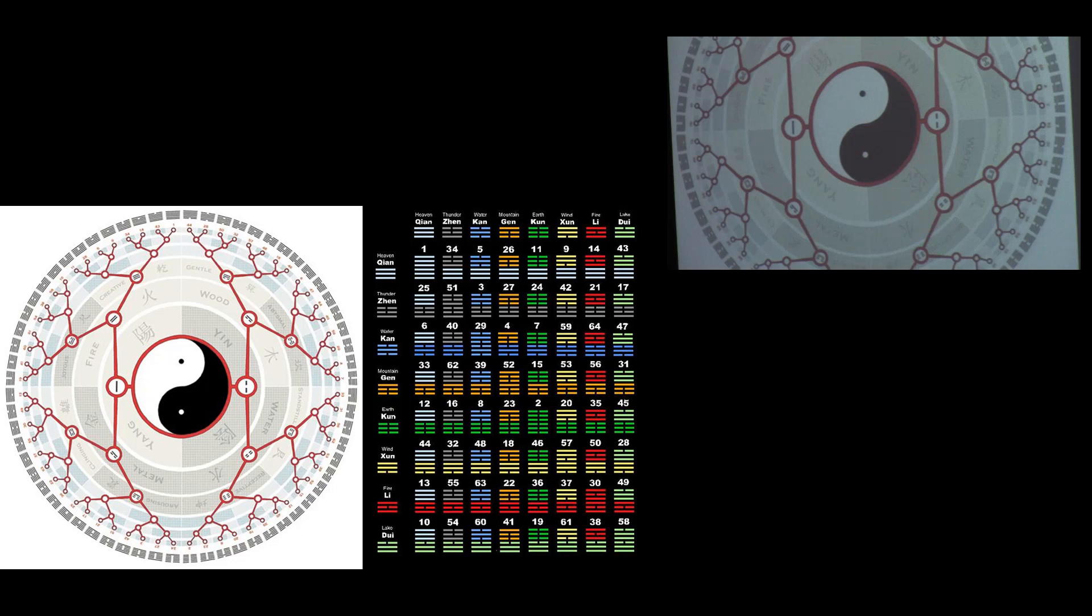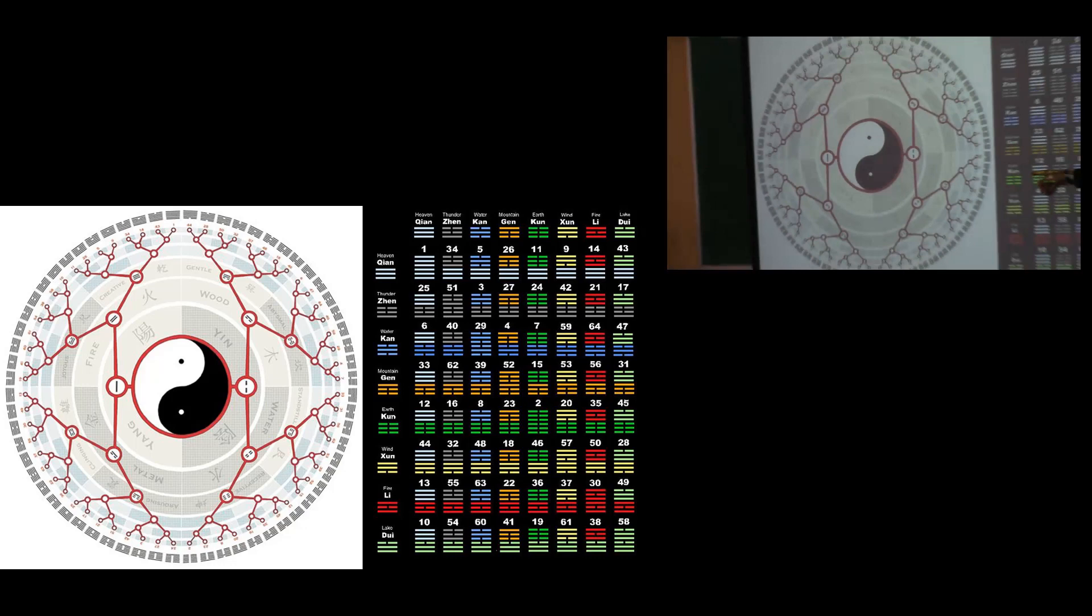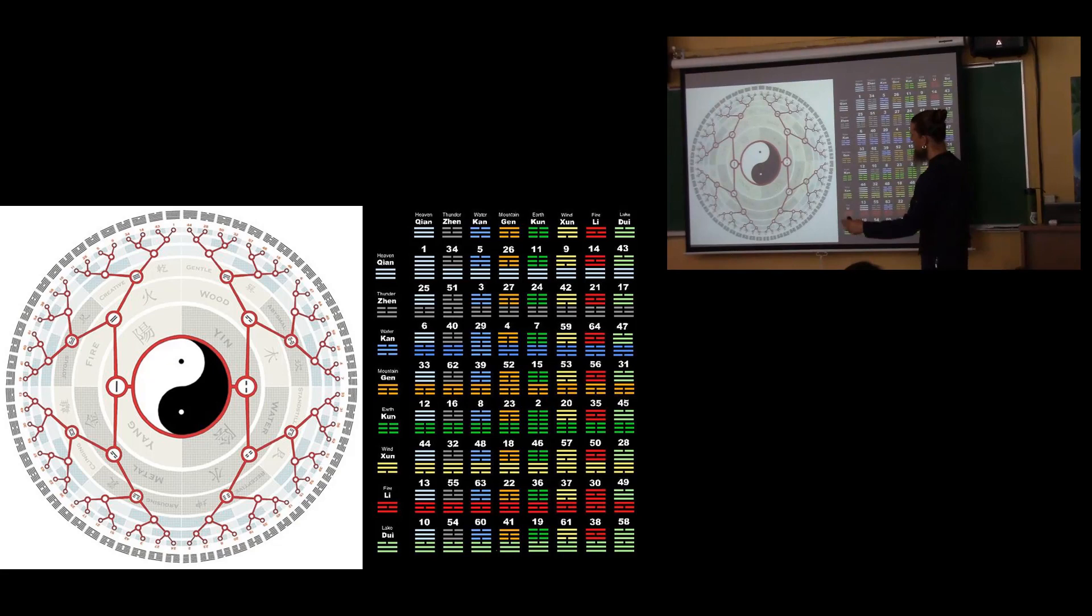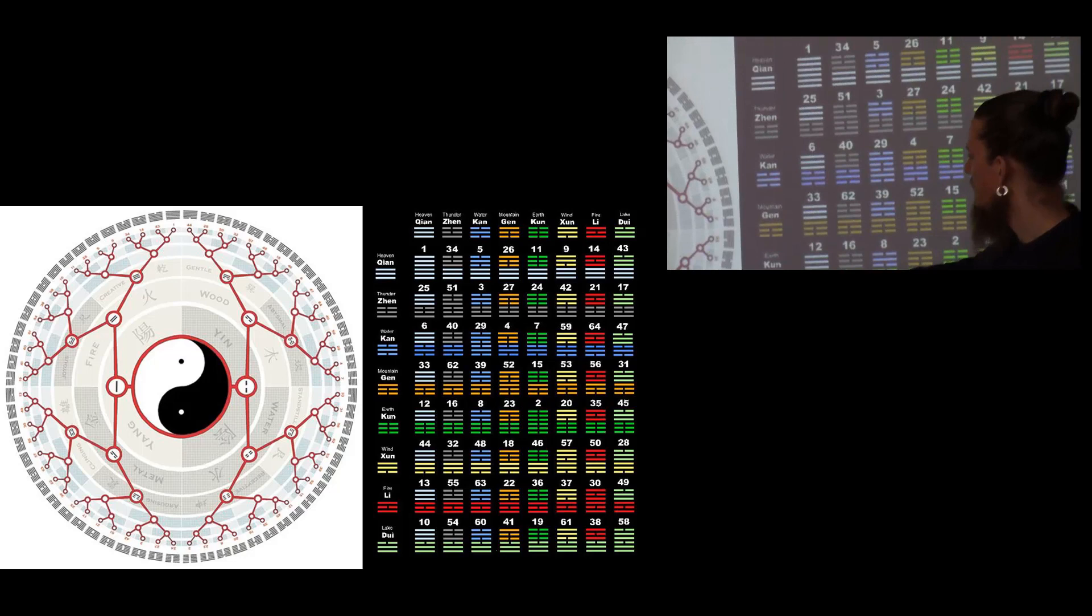And so these are two depictions of the ways in which we can understand the hexagrams of the Yi Jing. This one shows a grid based on the eight trigrams combining. And this one shows if we were to follow it from basic yin and yang and adding one more line for each section. This is more like a permutative map.